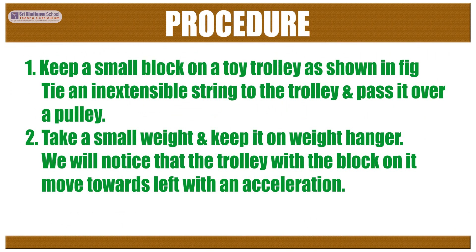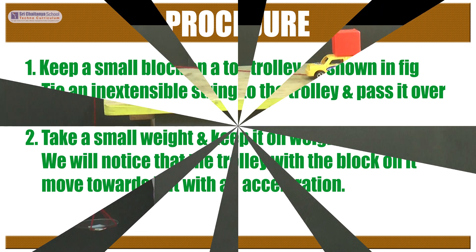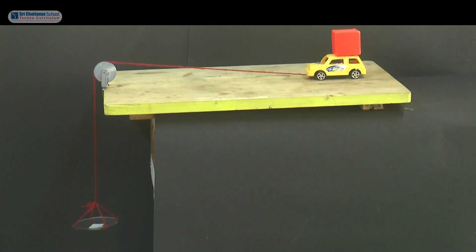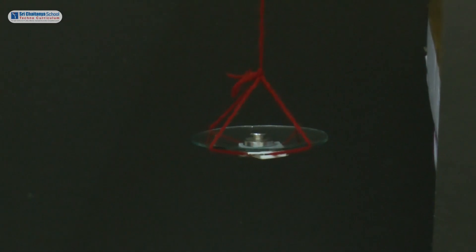Now it is time to see the procedure. Keep a small block on a toy trolley as shown in the figure. Tie an inextensible string to the trolley and pass it over a pulley. Take a small weight and keep it on the weight hanger.